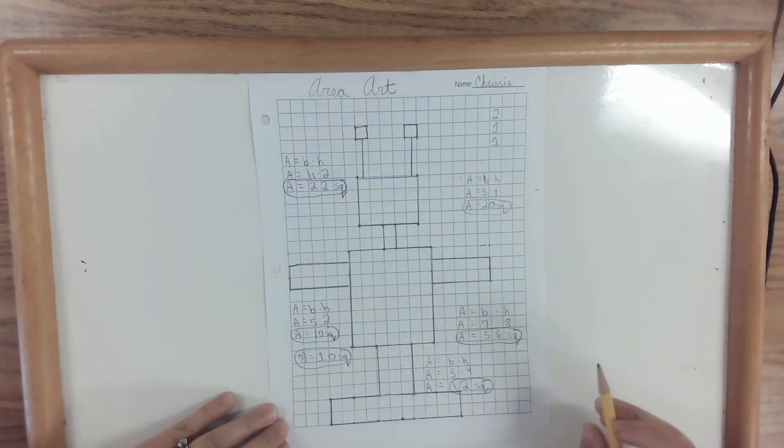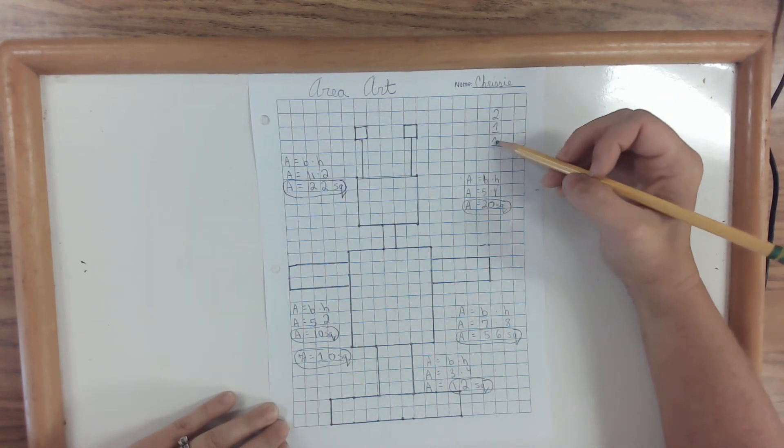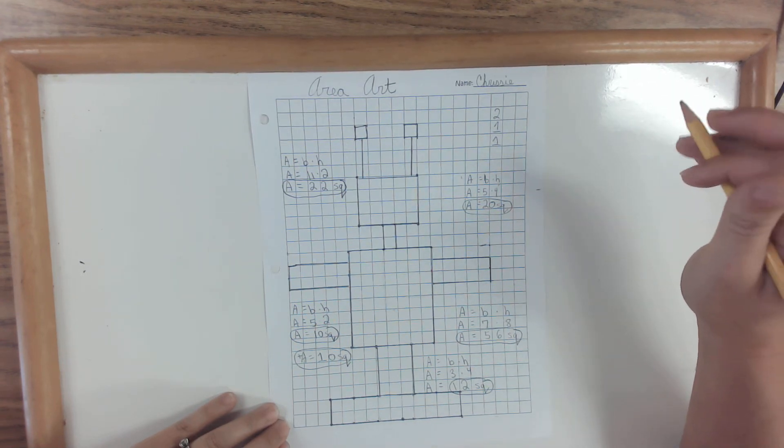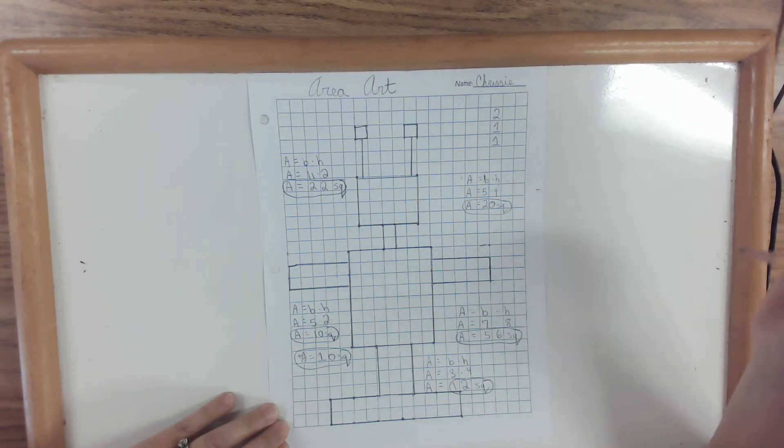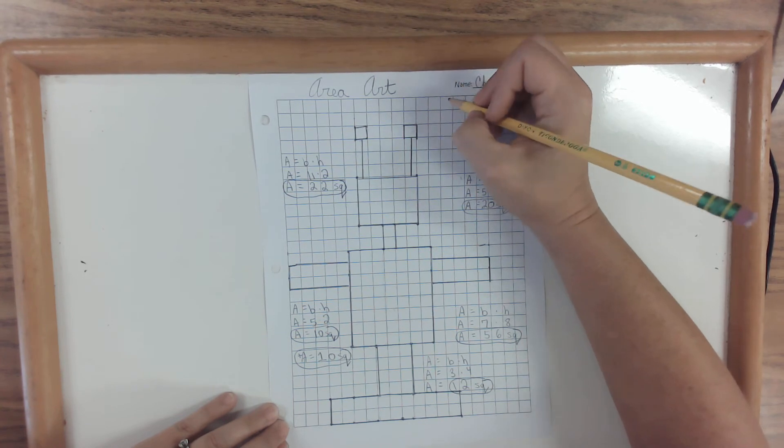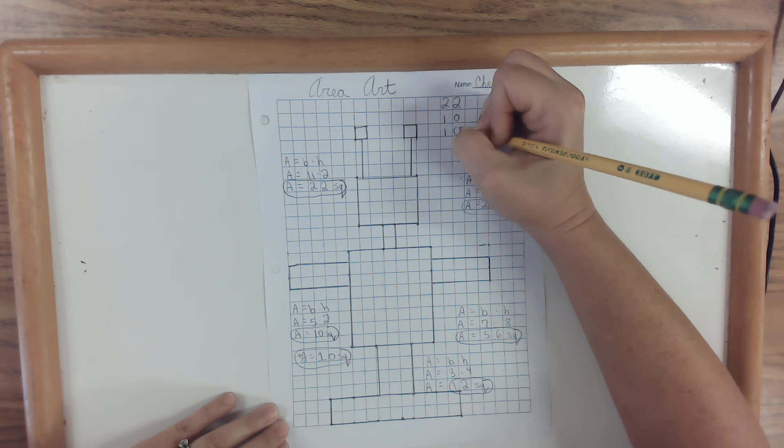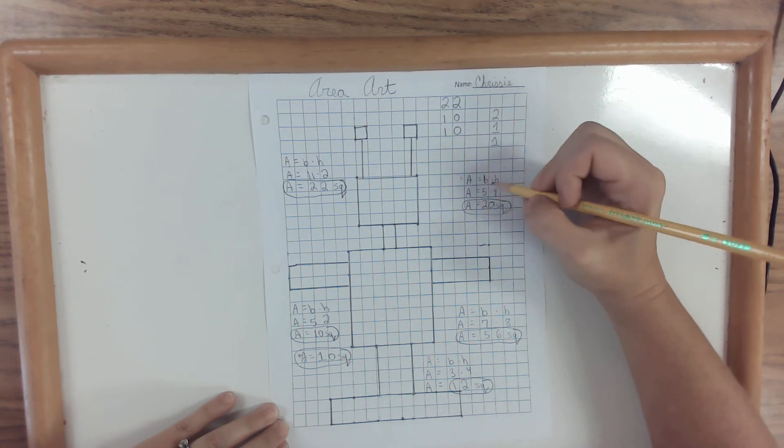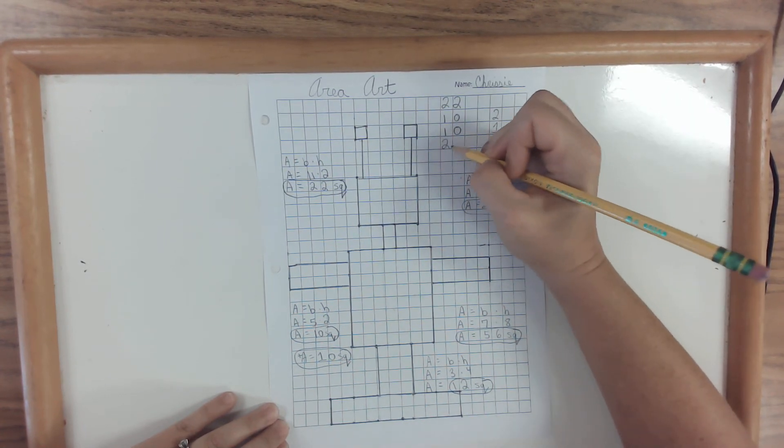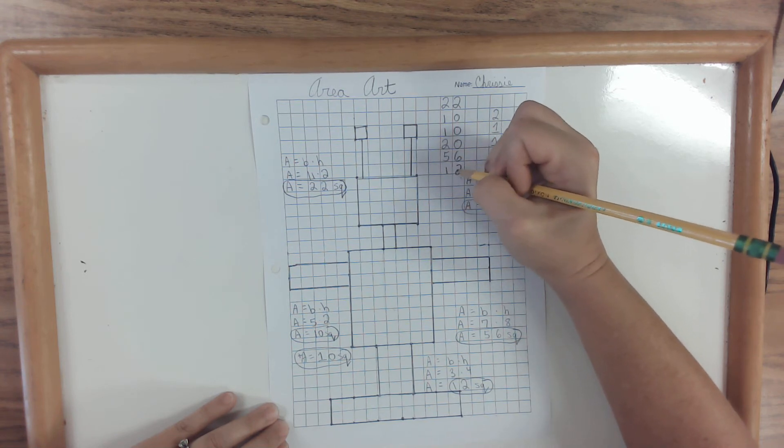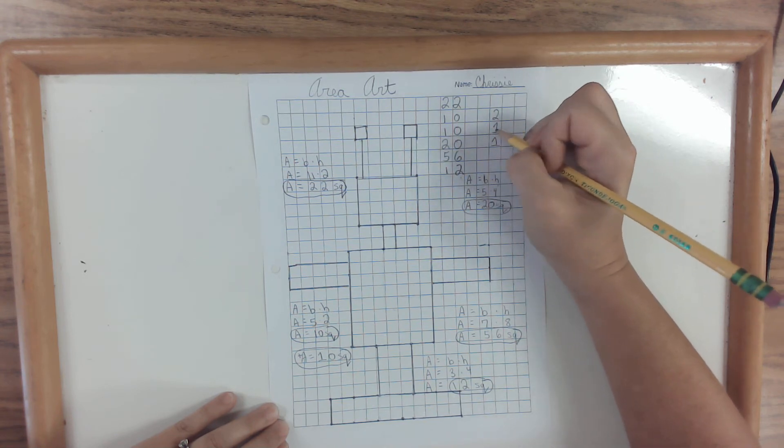Now, I'm not quite finished. These are my numbers, but I have to add them all up. And sometimes people get confused about how to add all these numbers. But all you need to do is write them down. We have twenty-two, ten, ten, twenty, fifty-six, twelve. And then I have two and one and one.